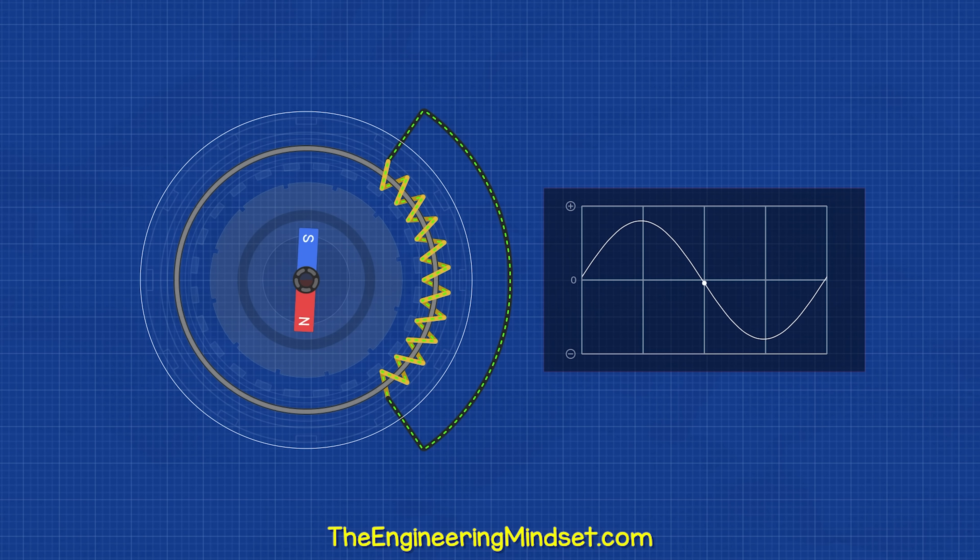The magnet in our generator rotates and pushes the electrons forwards and then pulls them backwards. This will create a single phase alternating current with a sine wave which repeats every time the magnet makes a full rotation past the coil.